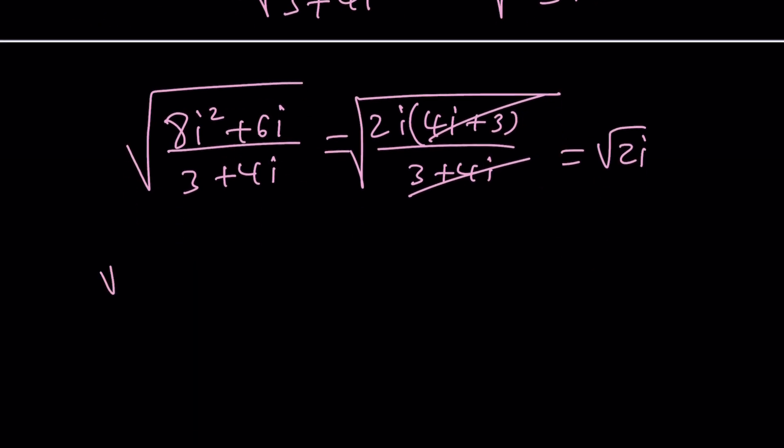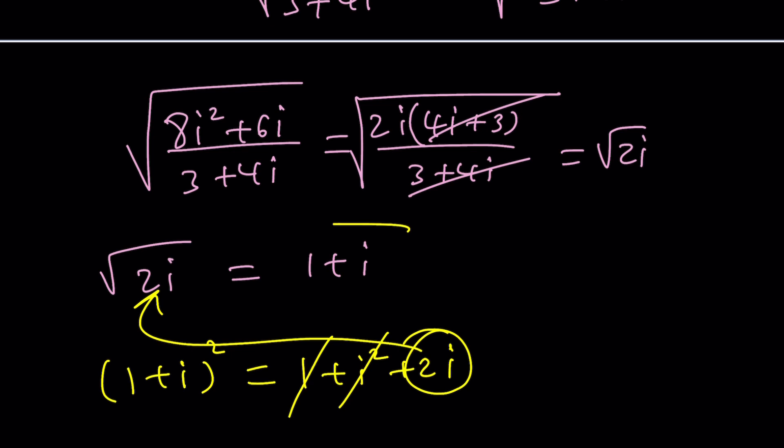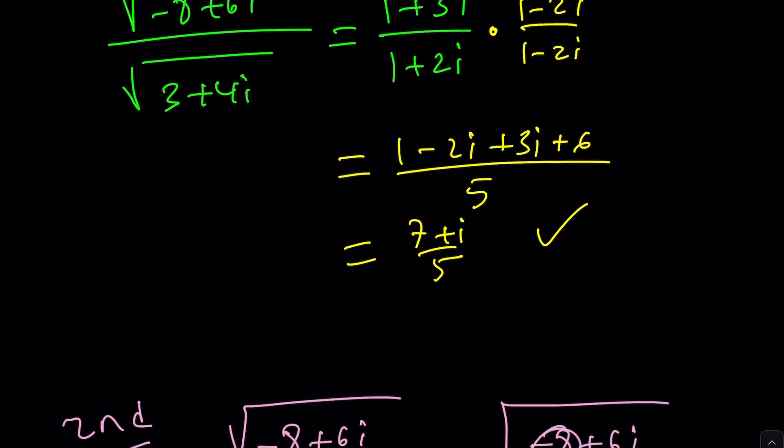And then I should be able to take out a two i here that gives me four i plus three and three plus four i. And then when I cancel these out I should end up with the square root of two i. Guess what that is equal to? The square root of two i is equal to one plus i. Because if you square one plus i you get one squared plus i squared plus two i. But i squared is negative one. So I end up with two i. That's why the answer is supposed to be one plus i.